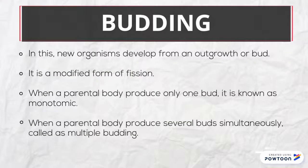In budding, new organisms develop from an outgrowth or bud. It is a modified form of fission. When a parental body produces only one bud, it is known as monotomic. When it produces several buds simultaneously, it is called multiple budding.